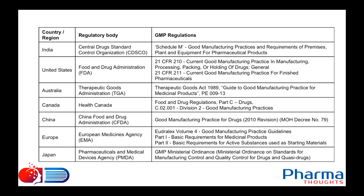In the United States, the regulatory authority is the Food and Drug Administration — the USFDA. The GMP regulations in the United States are 21 CFR Part 210 and Part 211. CFR stands for Code of Federal Regulations.